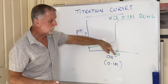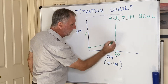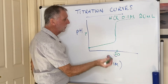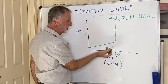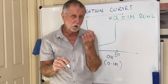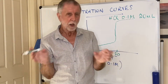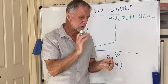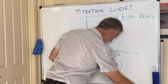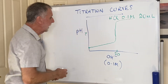This big change in pH — the so-called vertical section of the curve — is what we look at when choosing an indicator. I'll come back to that in just a moment. Let's show a different curve first.